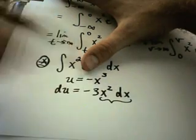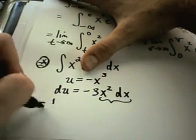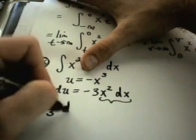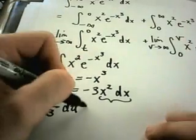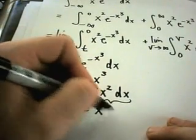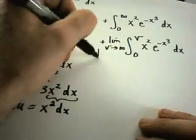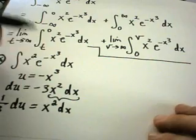Well I want to get just x squared dx alone here. So I'll divide by negative 3, and I'll have negative one third du equals x squared dx. So I'm kind of forgetting about this part for a second here.